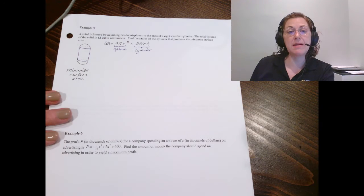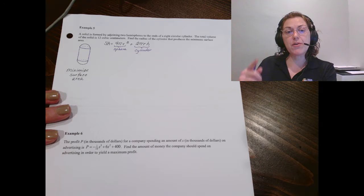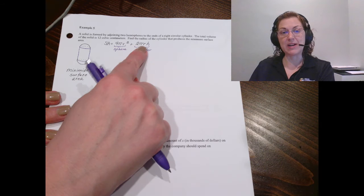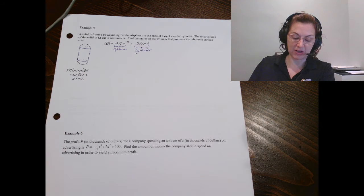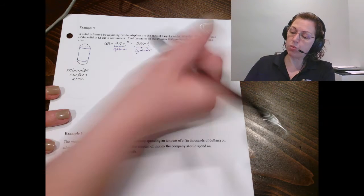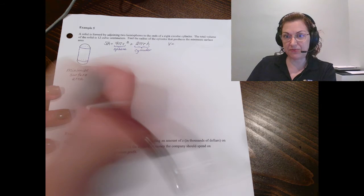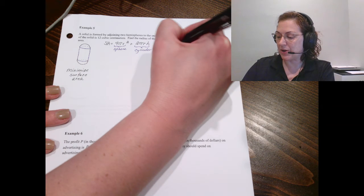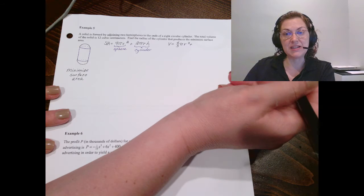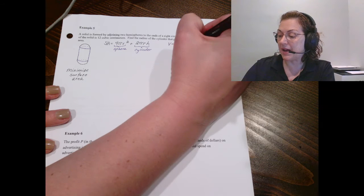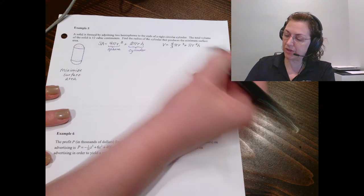This is my primary equation. This is the one eventually I will take the derivative of. However, I've got more than one variable over here on the right hand side. So I need a secondary equation. We were told the volume of the solid is 12 cubic centimeters. So let's write the equation for the volume. Well, the volume of the sphere would be 4/3πr³. And the volume of the cylinder portion would be πr²h. And we're told that that is 12.